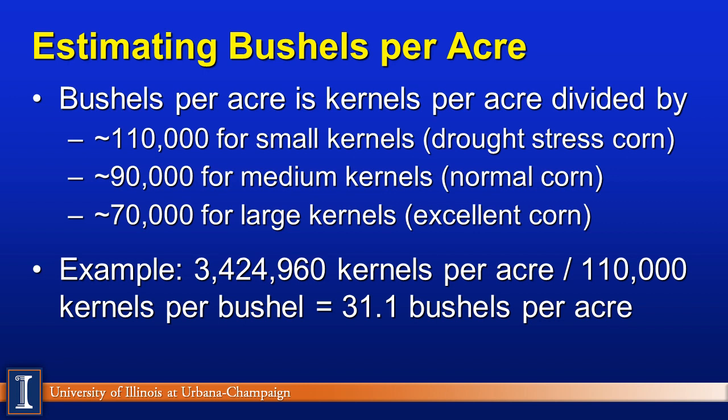That's kernels per acre, and now we must convert to bushels per acre. The guideline numbers are: 110,000 kernels per bushel for small kernels — that will be true for many farms depending on how much moisture there is to fill those pollinated ears; 90,000 for medium kernels, which is probably what we saw from the U of I; and 70,000 if you've really got a great field. So with 3.5 million kernels per acre for drought-stressed corn divided by 110,000, that gives about 31 bushels per acre — a very important number for dairy farmers and corn growers deciding whether to combine, and also for crop insurance calculations.